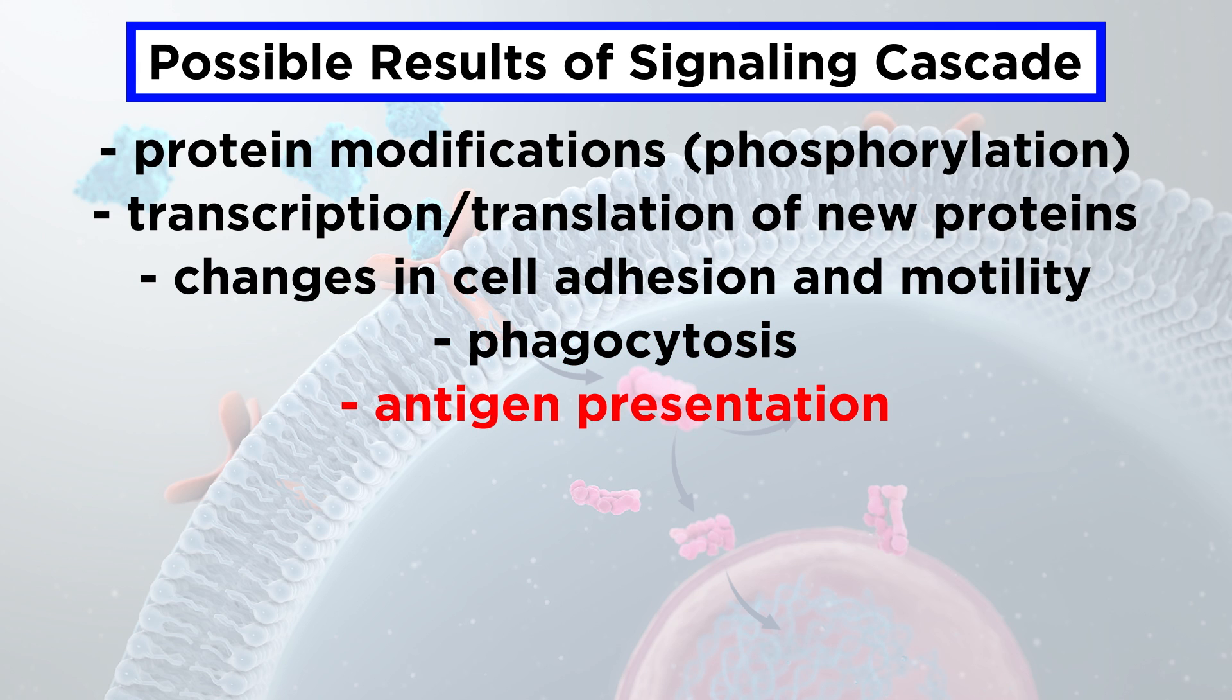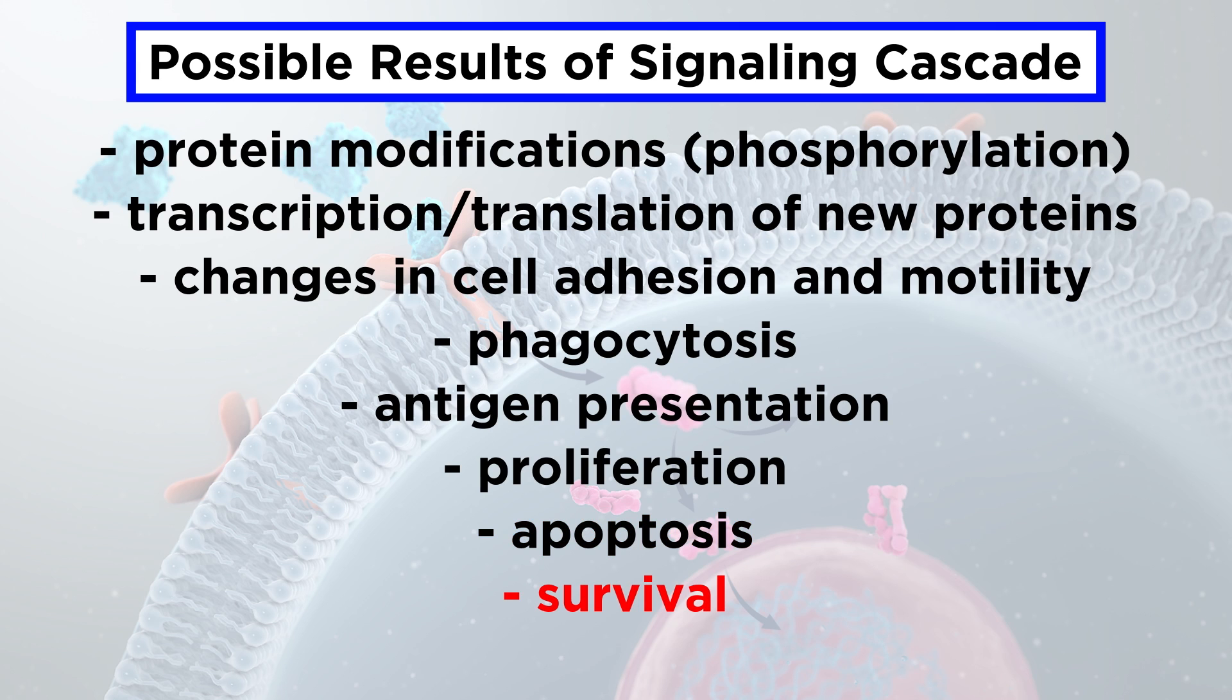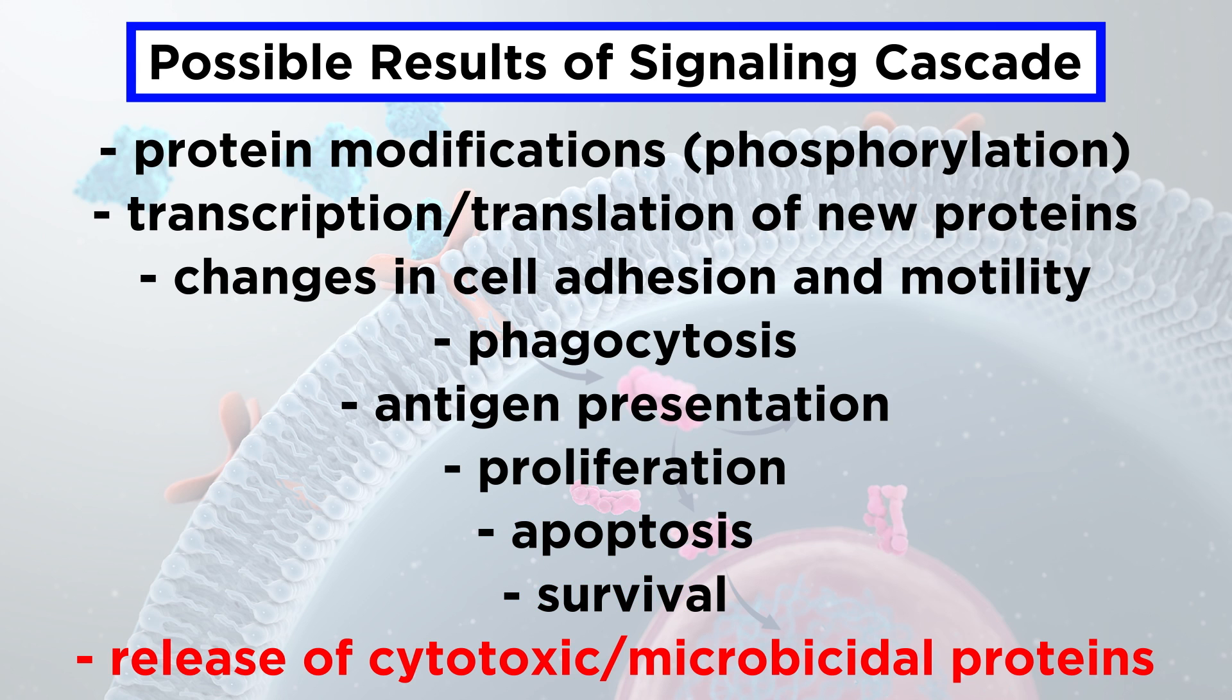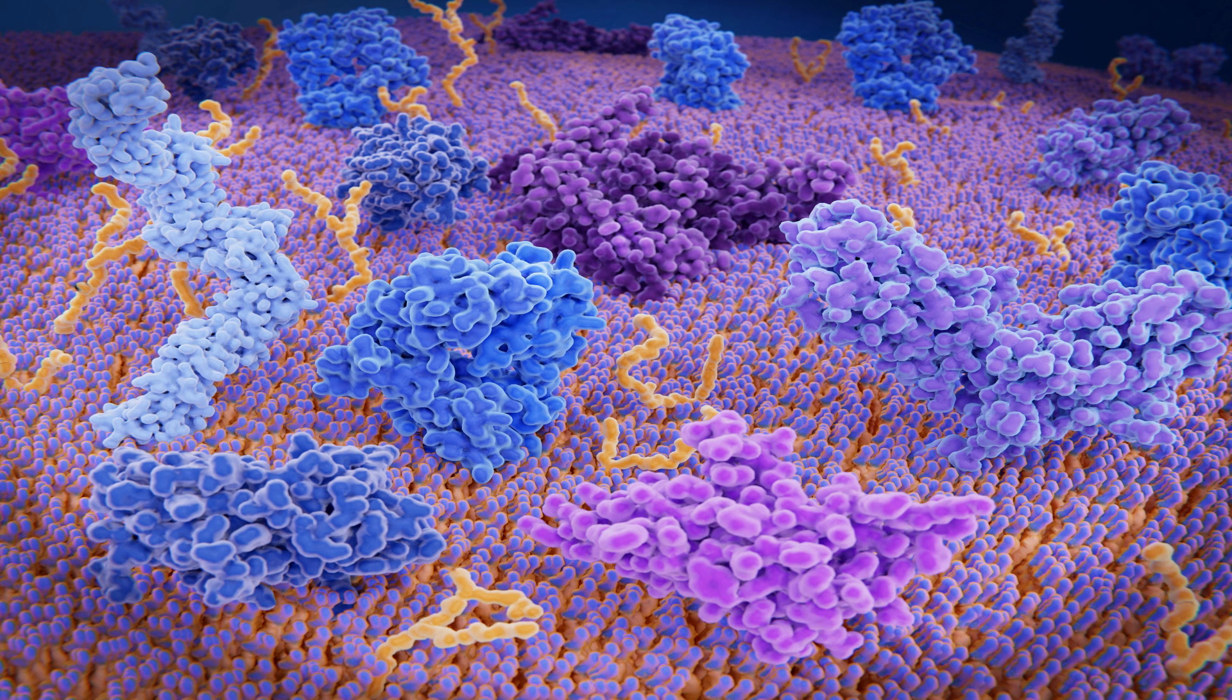Other outcomes include antigen presentation, proliferation, apoptosis, survival, and release of cytotoxic or microbicidal proteins. We will learn more about these outcomes where appropriate as we progress through the series. For now, let's continue examining immune cell receptors by looking at the types of receptors that can be present.